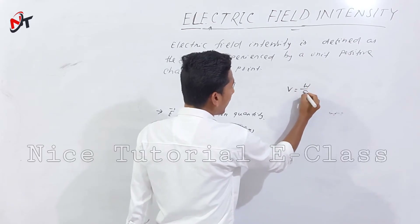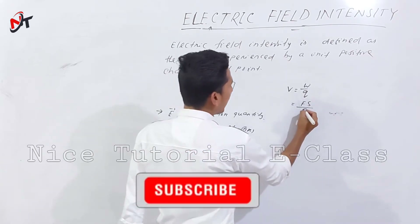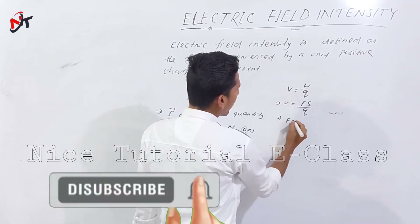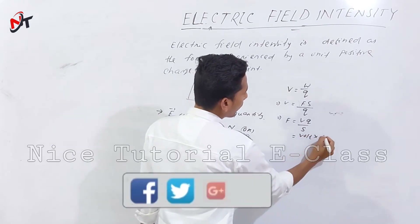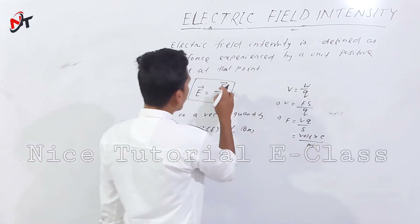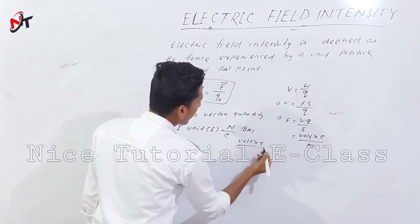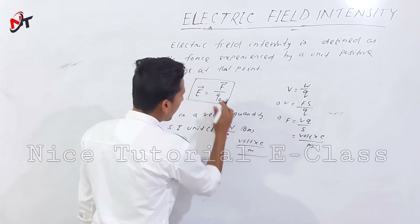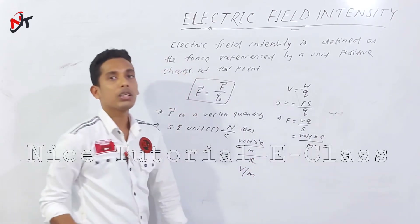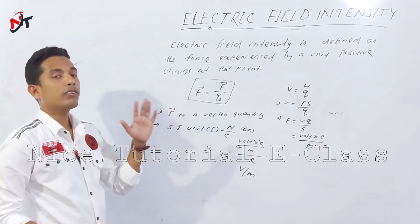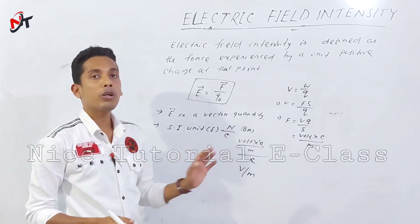The potential is equal to W by Q — work by charge. The formula: force into displacement by charge. So F equals V times Q upon S. The unit becomes volt times coulomb upon meter, which gives the unit of electric field intensity as Newton per coulomb and volt per meter.